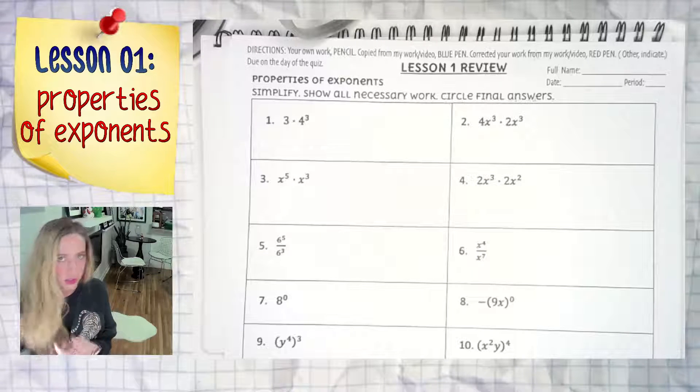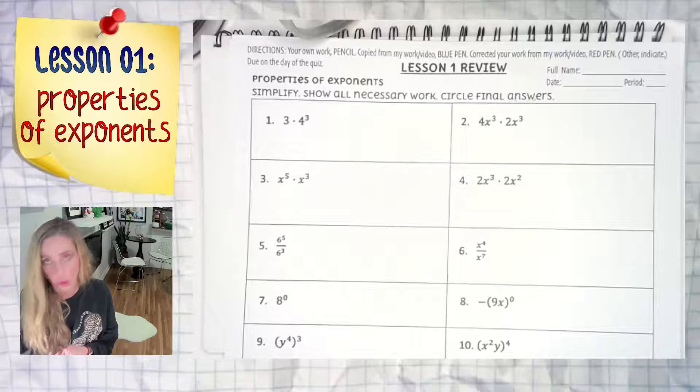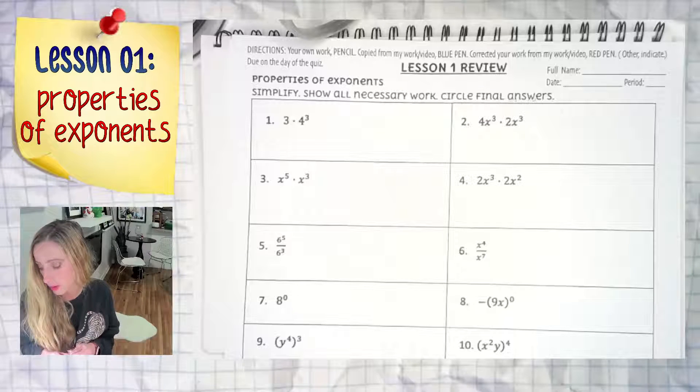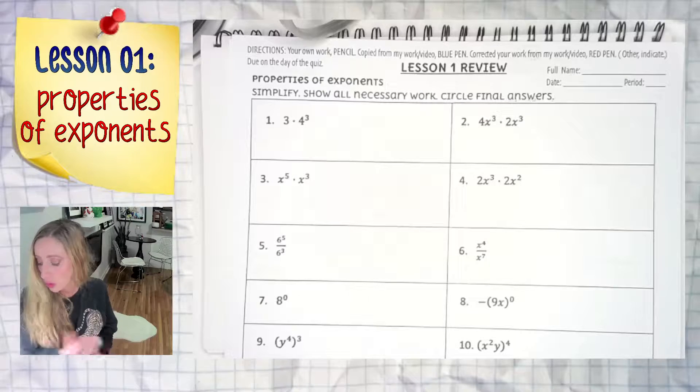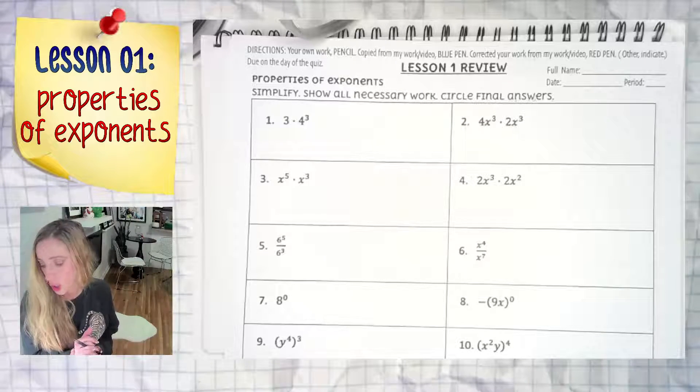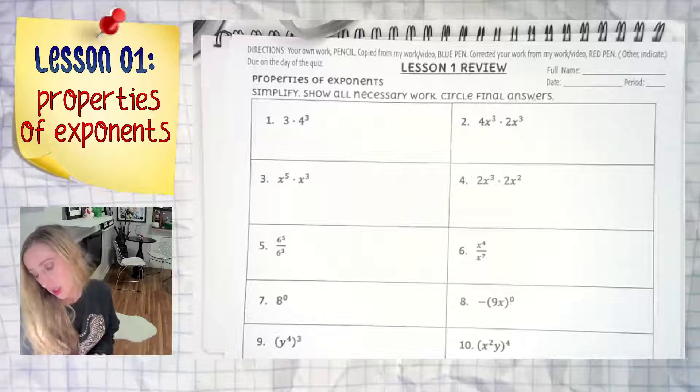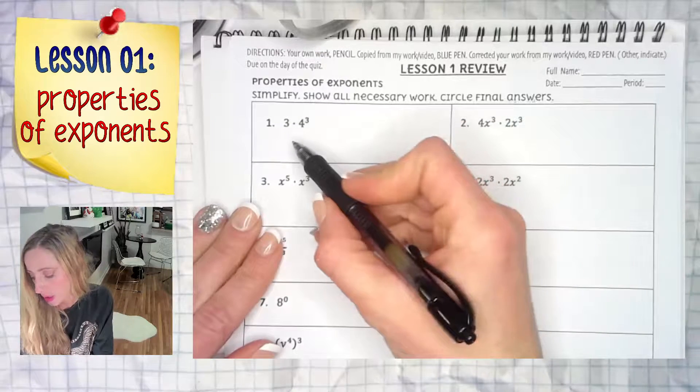So if you only need a few, you can pick the ones you want. Let's get into it. This first example is 3 × 4³.